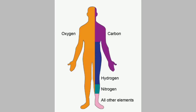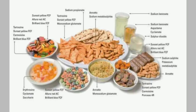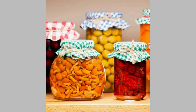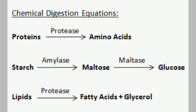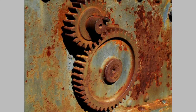The human body composition is made up of carbon, oxygen, hydrogen, and all other elements. Food preservatives are chemicals that preserve food for a longer period — pickles, jams, jellies, and marmalades are examples. Digestion is also a chemical process: protein is converted into amino acids, starch is converted into glucose, and fatty acids are also converted. These are all chemical reactions.